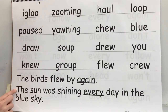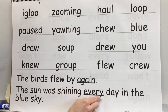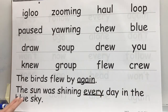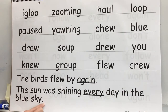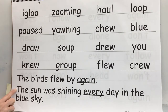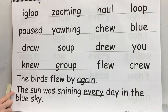Get ready. Word: the. Word: sun. Word: was. Word: shining. Word: every. Word: day. Word: in. Word: the. Sound: ooh. Word: blue. Word: sky. Ghost this sentence. Get ready. Read: the sun was shining every day in the blue sky. Yes, the sun was shining every day in the blue sky.